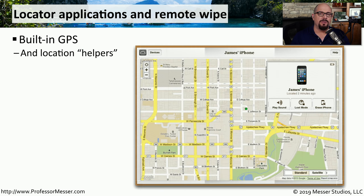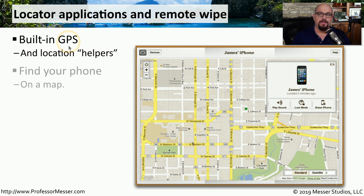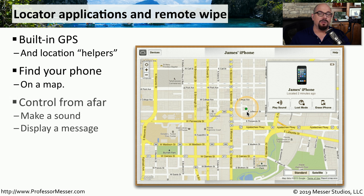Our mobile phones are small devices, and it can be very easy to lose track of them. Fortunately, our phones have built-in capabilities that allow us to find out exactly where they may be located. This is done through global positioning system radios, and it may also use 802.11 to help triangulate where it may be. This will allow you to find your phone and even pinpoint the location on a map. You can also have your phone make a sound, which would allow you to listen for where that phone may be located.